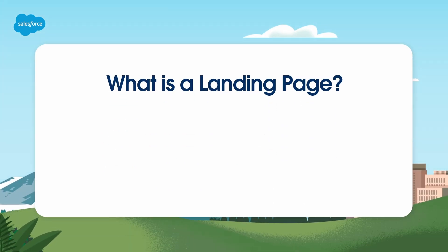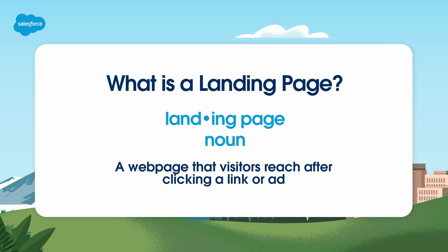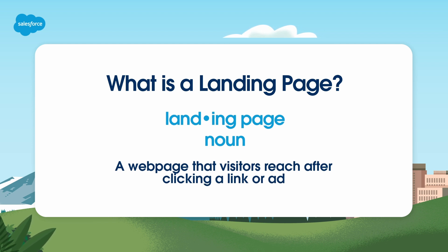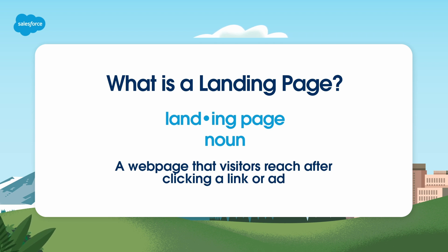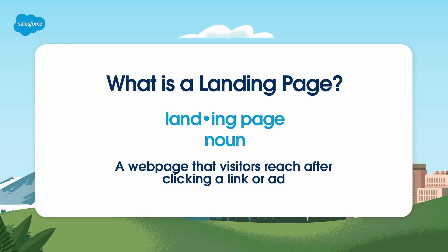Let's begin by defining what a landing page is. A landing page is a web page that visitors land on after clicking an ad or a link. Typically, landing pages display content specific to the corresponding ad, search keyword, or clicked link. It's important to note that landing pages hosted in Marketing Cloud Account Engagement are not automatically integrated into your website hierarchy.